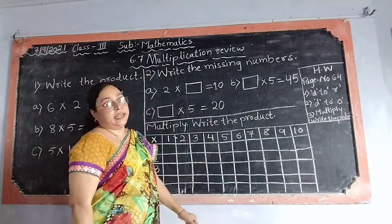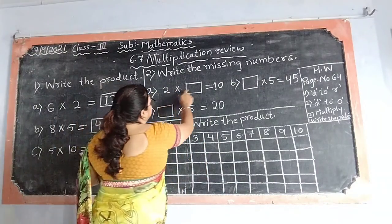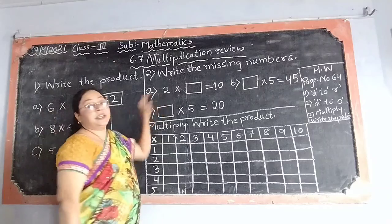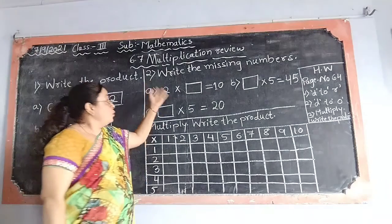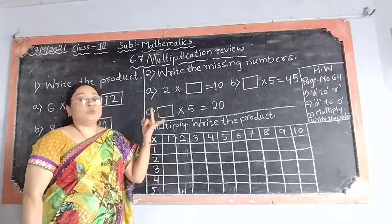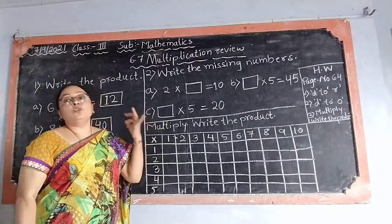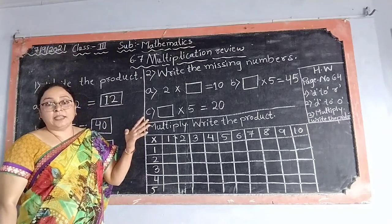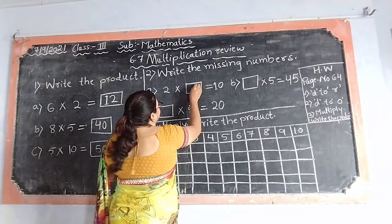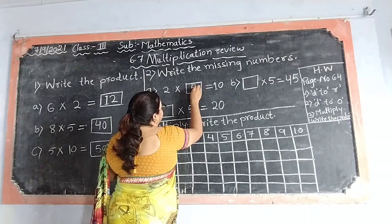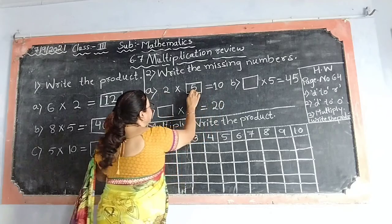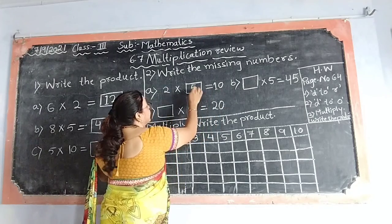This is how we will find it. See: 2 multiplied by dash equals 10. What to do? Very simple — we start reading 2's table and find which place 10 will come. 2 1's are 2, 2 2's are 4, 2 3's are 6, 2 4's are 8, and 2 5's are 10. So what is the missing number? 5. 2 multiplied by 5, the product is 10. The missing number is 5.